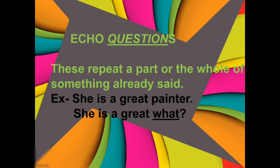And our next kind is echo questions. Do you all know what is echo? Something and the sound reflects back — that is echo sound. It gets reflected back. These repeat a part or the whole of something already said. Like: she is a great painter. So the question asked is she is a great what? — ki kya hai great painter. Although you have repeated the sentence, you have asked it in a form of a question. She is a great what? She is a great painter. So echo questions — because we have repeated the part.